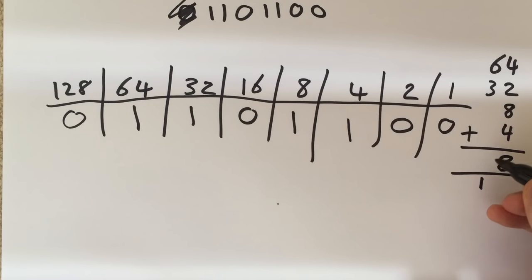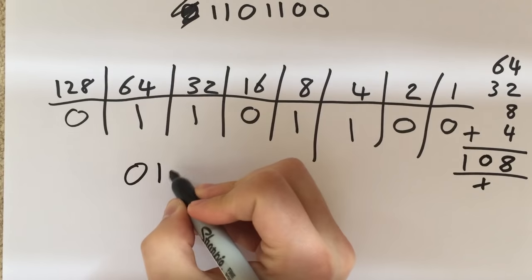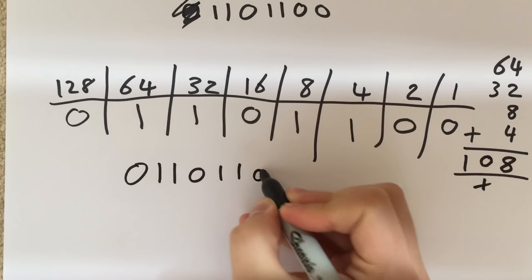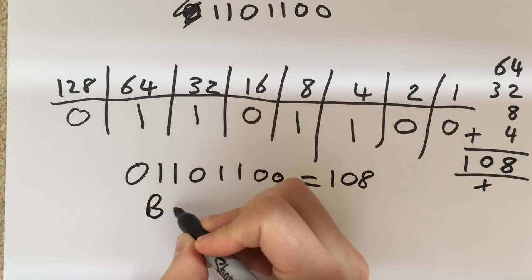So now it's fair to say that the binary number 01101100 is equal to the denary number 108, this one being binary and this one being denary.